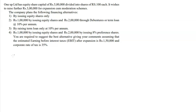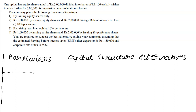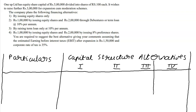We must first build a capital structure alternatives table. We have particulars on one side and capital structure alternatives — one, two, three, and four — across the top. Please keep adequate spacing when you do this.